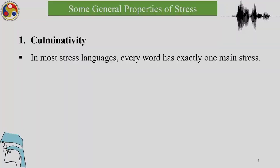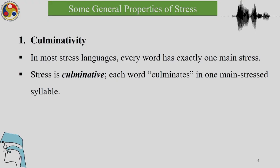Number one is that of culminativity. What does culminativity mean? It means that in most stressed languages, every word has exactly one main stress. The intensity has to culminate in one part of a word. Stress is culminative — each word culminates in one main stress syllable, which can be called prominent, stressed, or accented, but that stress syllable has to have the property of culminativity.